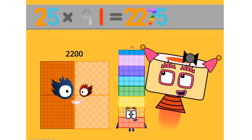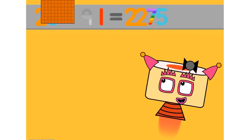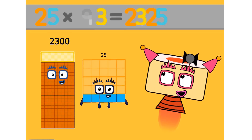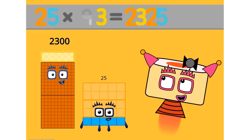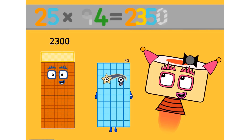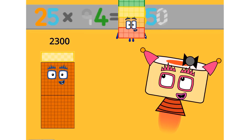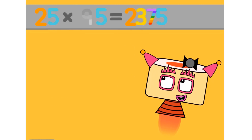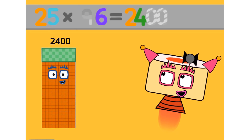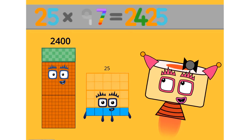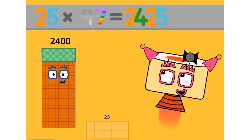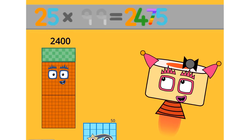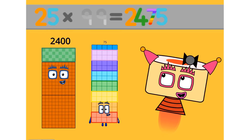25 times 91 equals 2275. 25 times 92 equals 2300. 25 times 93 equals 2325. 25 times 94 equals 2350. 25 times 95 equals 2375. 25 times 96 equals 2400. 25 times 97 equals 2425. 25 times 98 equals 2450. 25 times 99 equals 2475.